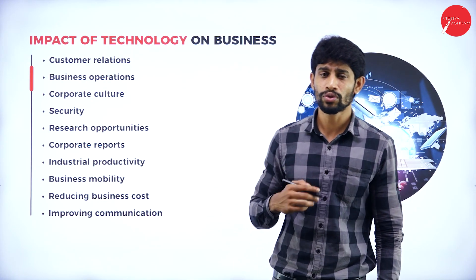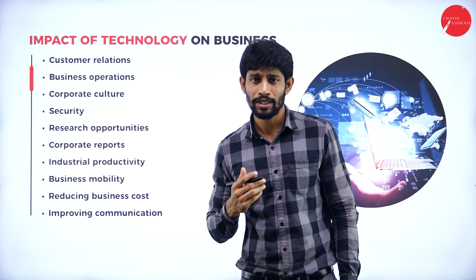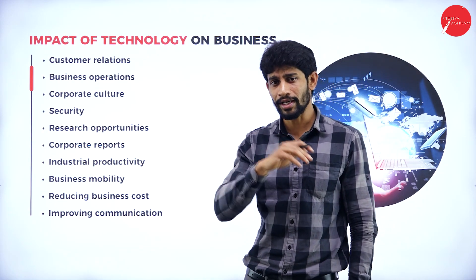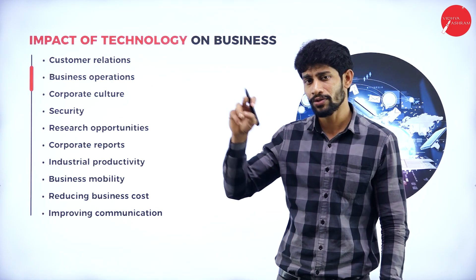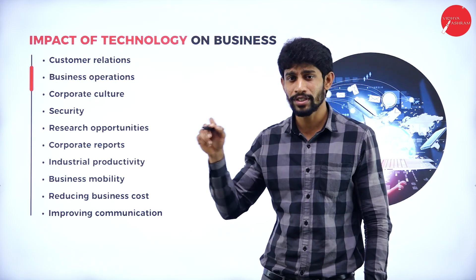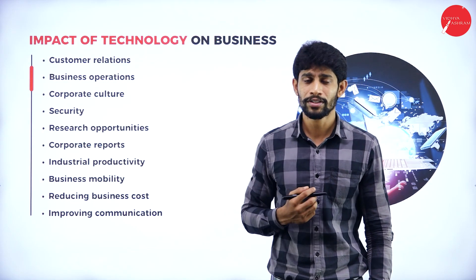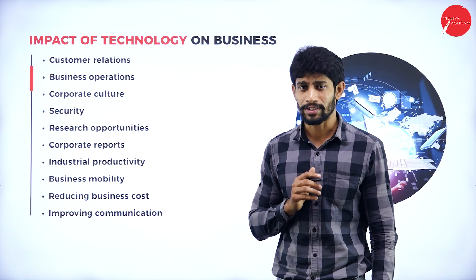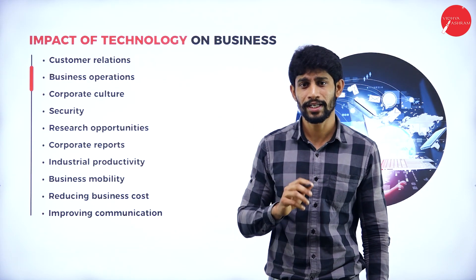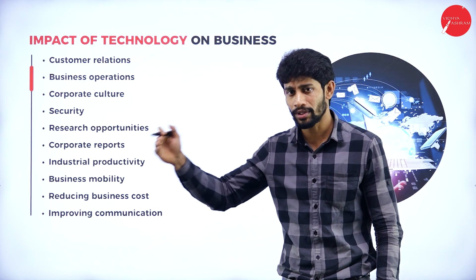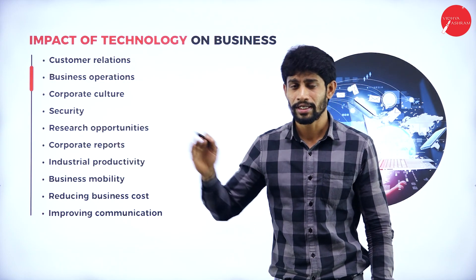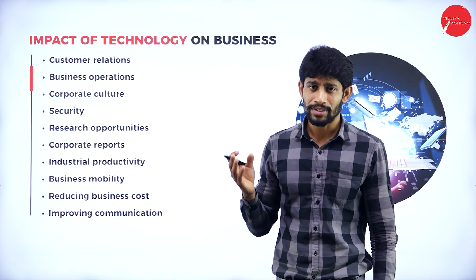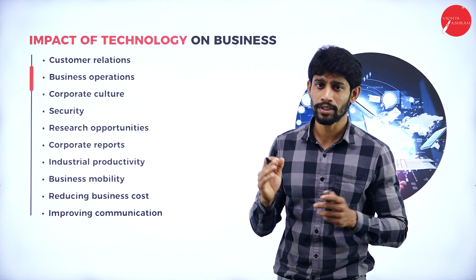Next, business operations. Technology is very helpful to maintain the relationship between the wholesaler, retailer, and manufacturer. The manufacturer can share product information with the wholesaler, and the wholesaler can share it with the retailer — they need not visit each other's places. The wholesaler can send a message to the manufacturer directly, and the wholesaler can even meet the direct consumer. By using technology, without meeting in person, we can do and expand our business all over the world.